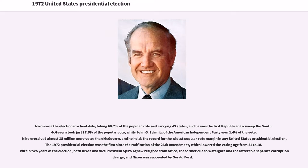Nixon won the election in a landslide, taking 60.7 percent of the popular vote and carrying 49 states, and he was the first Republican to sweep the South. McGovern took just 37.5 percent of the popular vote, while John G. Schmitz of the American Independent Party won 1.4 percent of the vote. Nixon received almost 18 million more votes than McGovern.